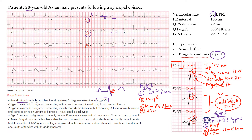The main differences between types 2 and 3 are the terminal ST elevation amount. Type 1 clearly stands out as the most common pattern to focus on: J point or ST segment elevation at least two millimeters, coved type ST segment, descending terminal ST elevation going below baseline, and a negative T wave — all different from types 2 and 3.